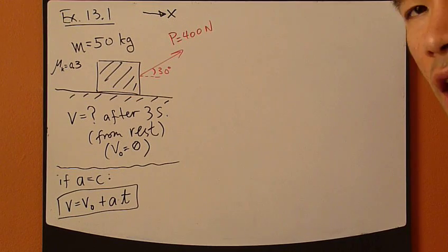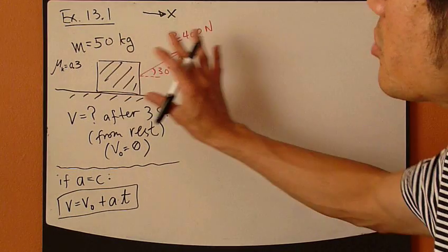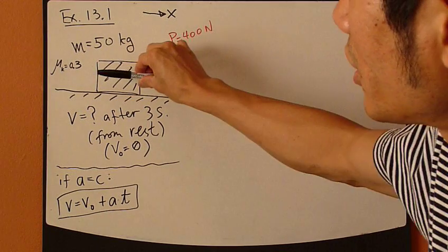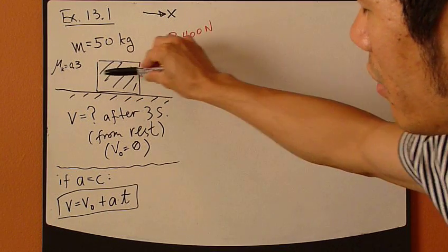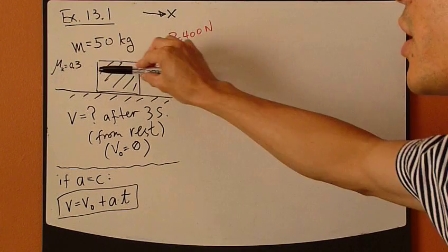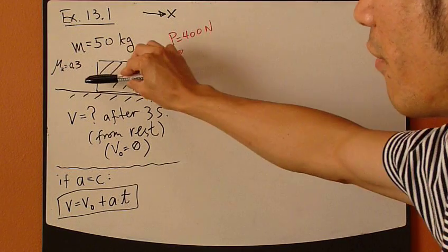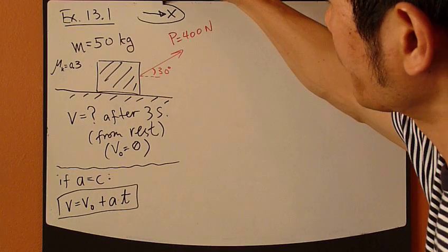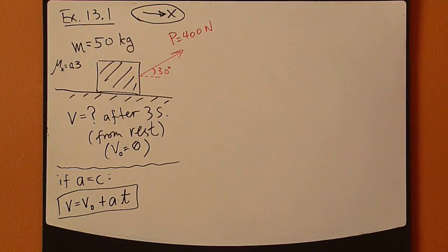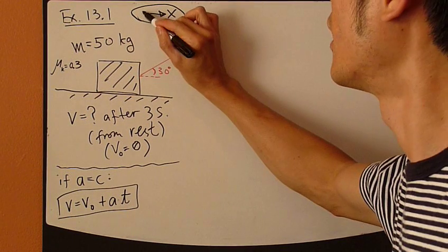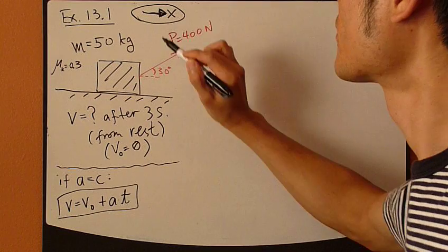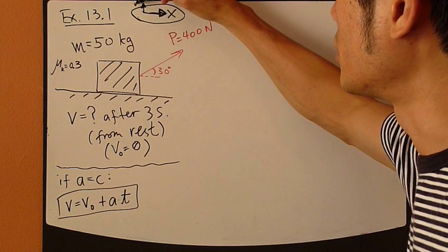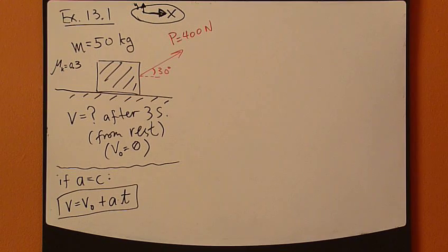Now look at this motion right here. This crate will have an acceleration this way, horizontal acceleration and velocity. It has velocity changes, of course. So I'm going to define my coordinate system as such. Just x going to the right. I can also define my y coordinate system as going up.